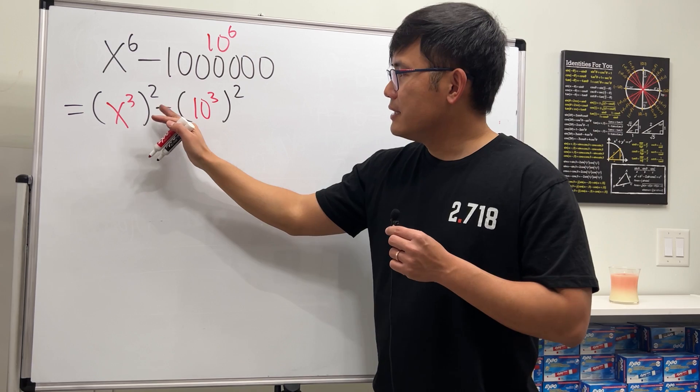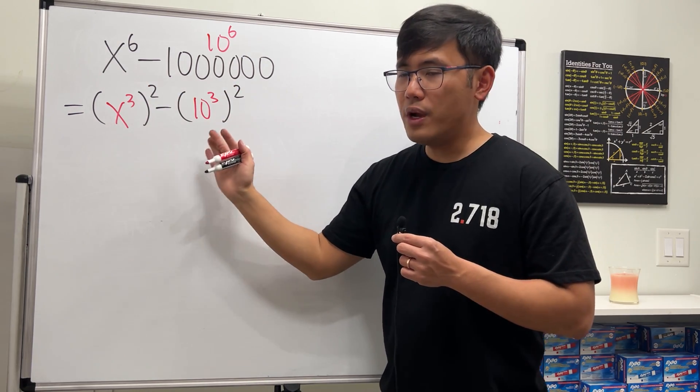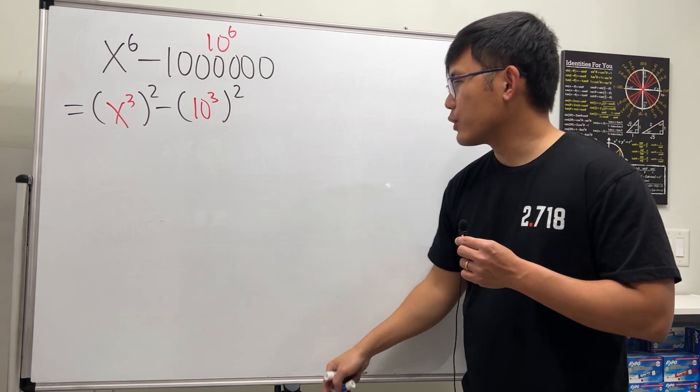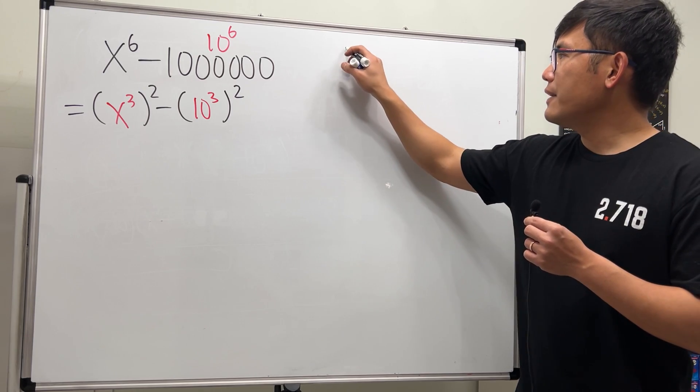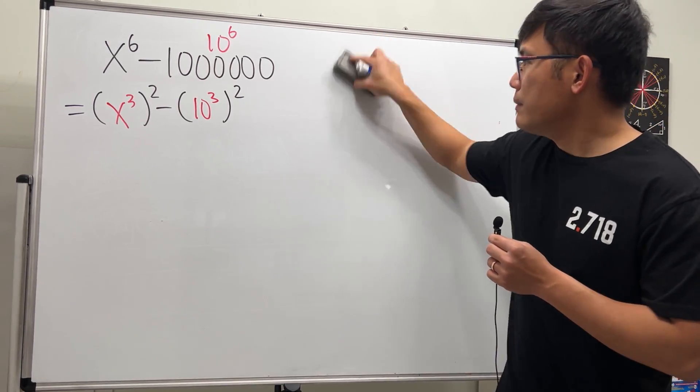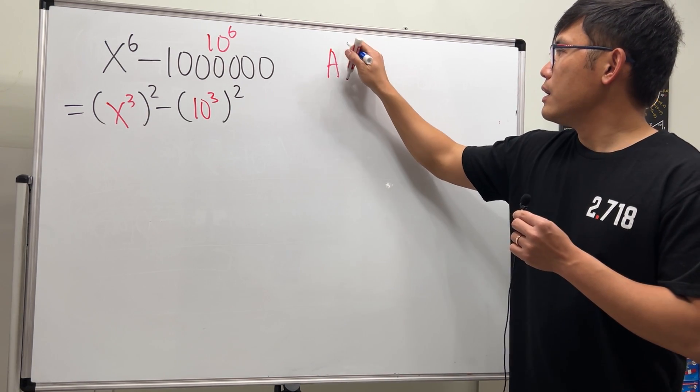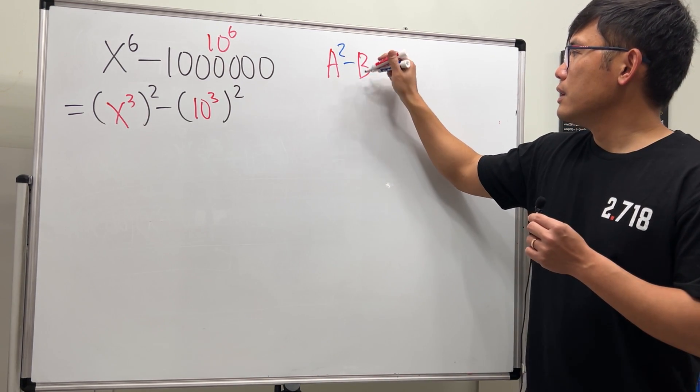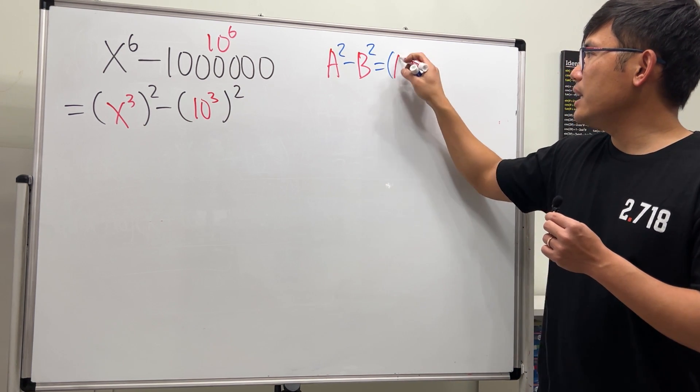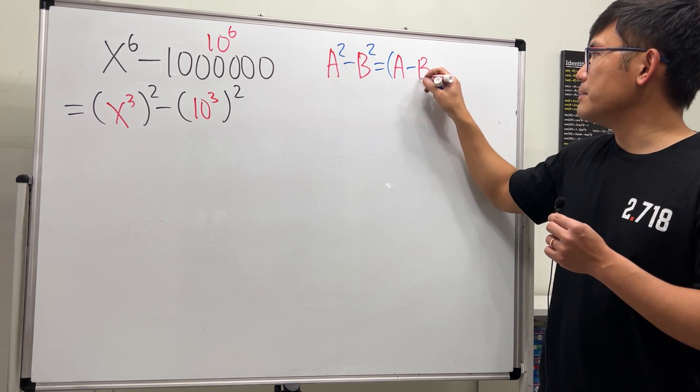And now, we are looking at this as a difference of two squares. So, remember the formula right here. When we have a square minus b square, this right here can be factored as a minus b times a plus b.